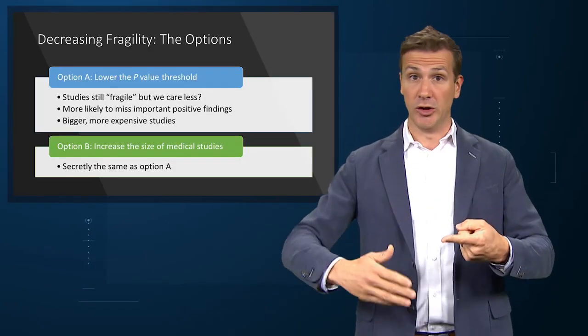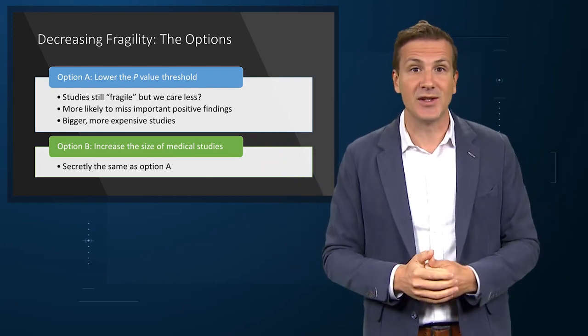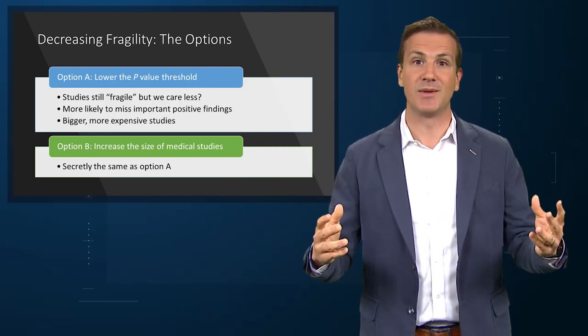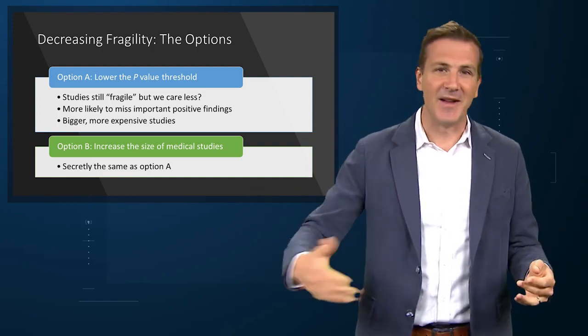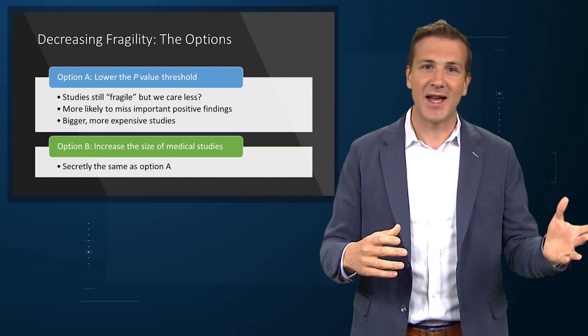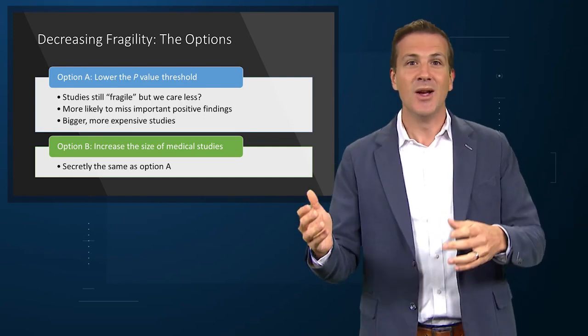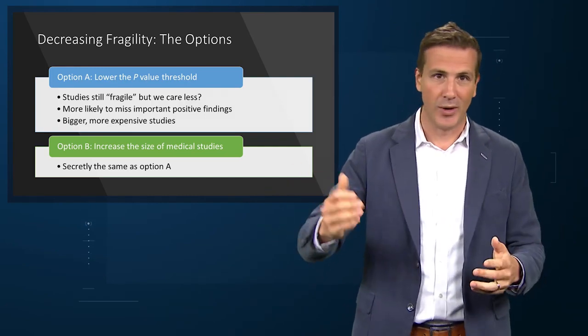We need to be willing to reject studies that have a p-value of .045 if the hypothesis being tested is unlikely or the methodology is flawed. We need to be able to accept studies with a p-value of .07 if the hypothesis being tested is very likely. Assume you're really worried about fragile medical studies — what are the potential solutions? First, we could lower the p-value threshold for statistical significance. There's an ongoing debate about that. Of course, there will be fragile studies at any threshold. If the p-value threshold were .01, people might complain that studies are fragile because small changes in outcomes will change the p-value from .009 to .011.